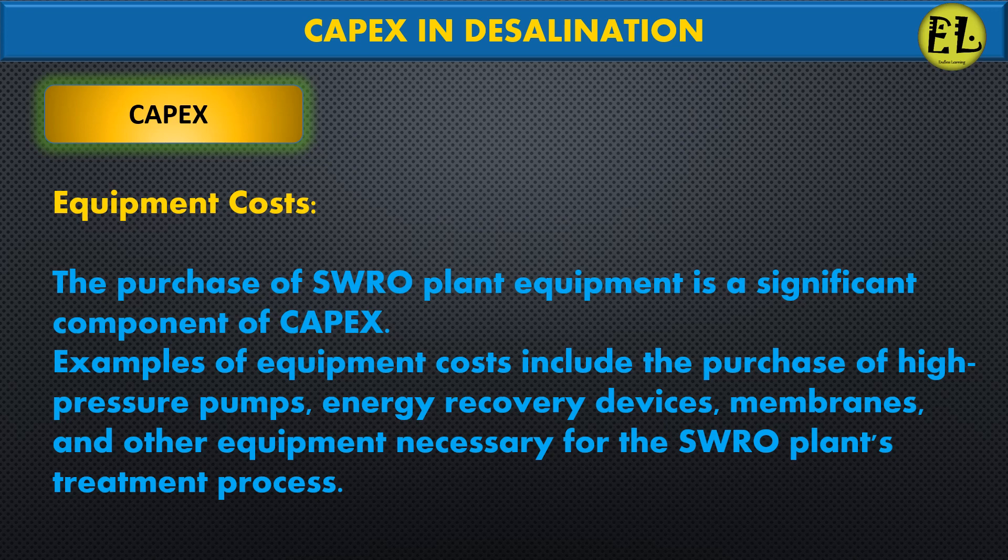The purchase of SWRO plant equipment is a significant component of capex. Examples of equipment costs include the purchase of high-pressure pumps, energy recovery devices, membranes, and other equipment necessary for the SWRO plant's treatment process.